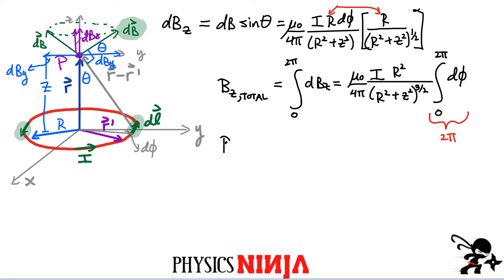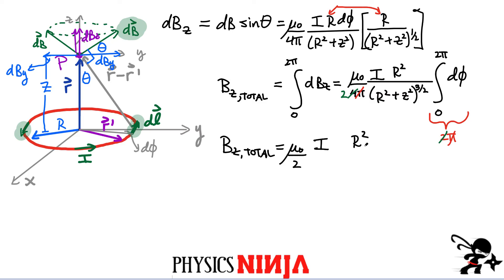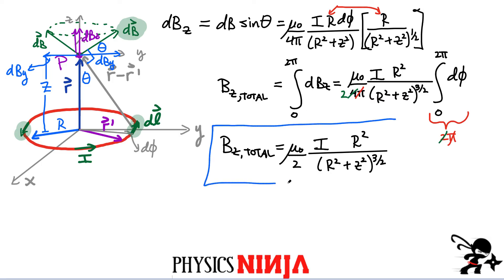We're almost done. The two pi from the integration is going to cancel the pi in the denominator. The two from the integration and the four in the denominator combine, leaving a two in the denominator. The final expression is: B total equals mu naught over two, times i, times r squared, divided by r squared plus z squared to the three-halves. That's quite a bit of work, but actually a little bit less than the square loop — the square loop is a little bit harder than this one.